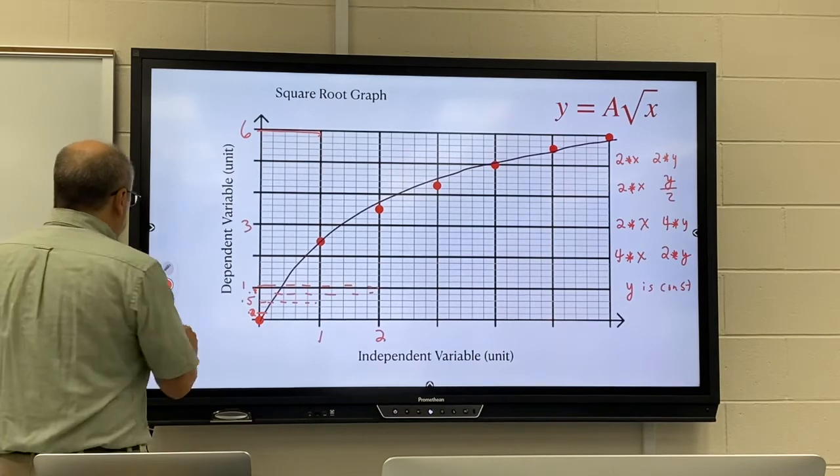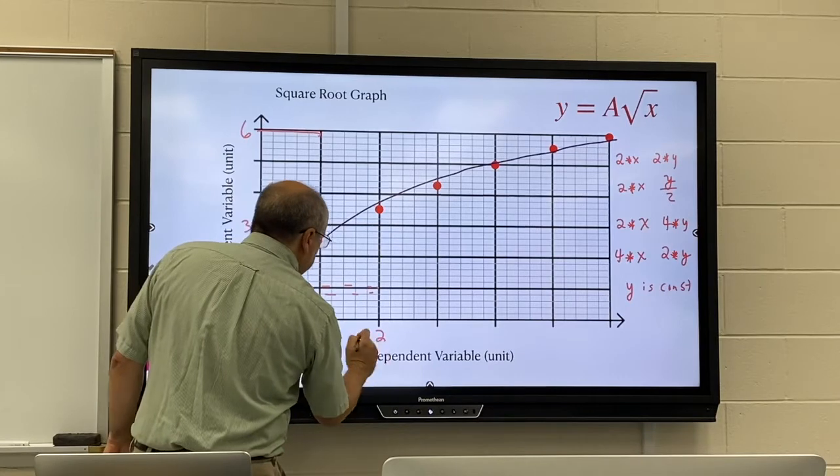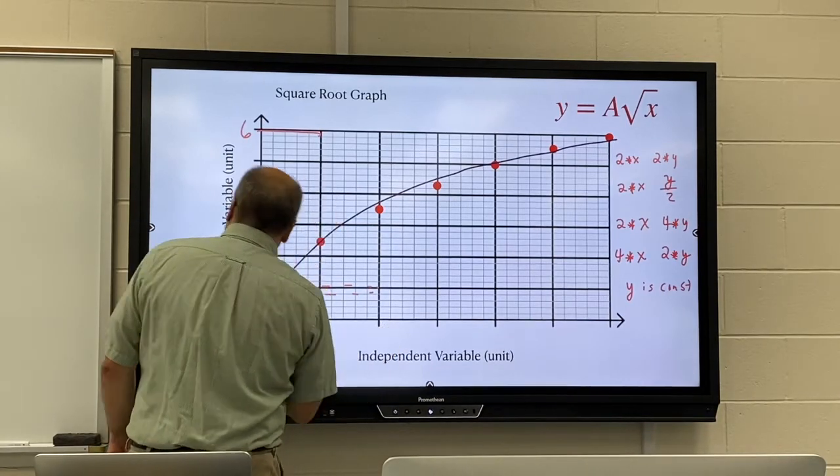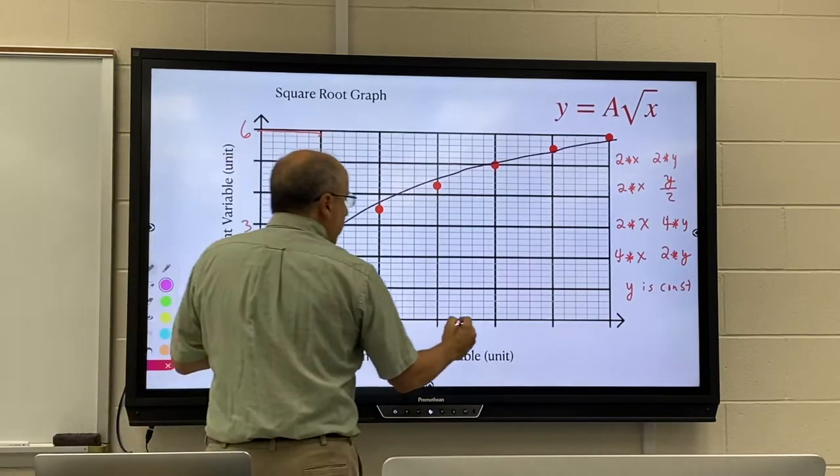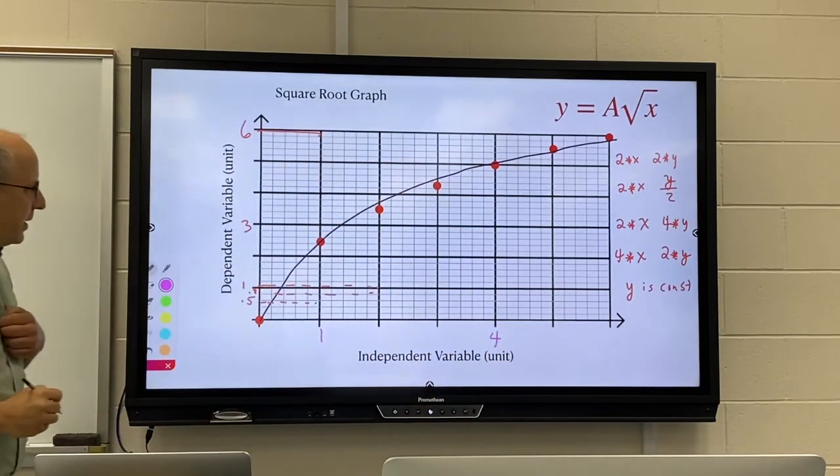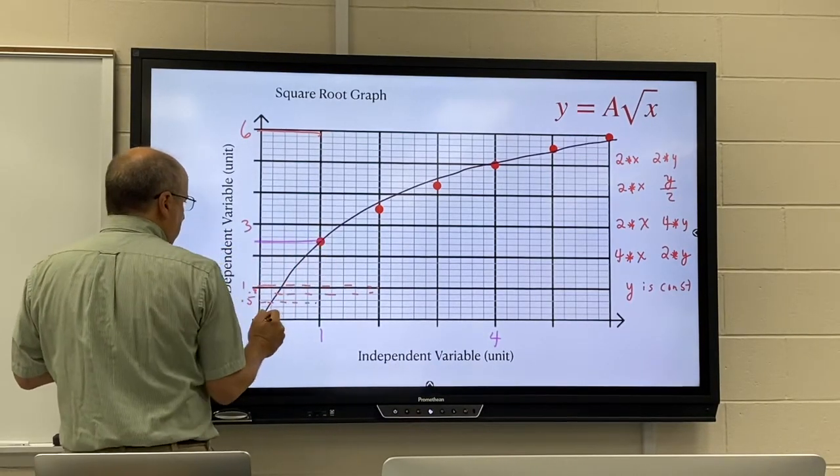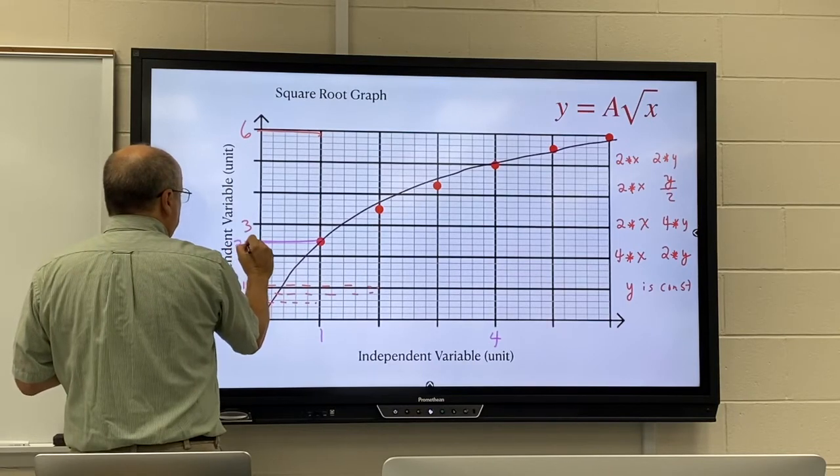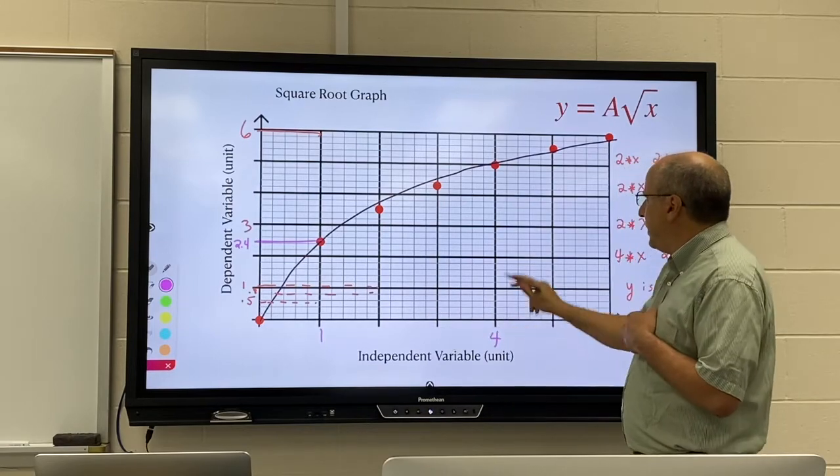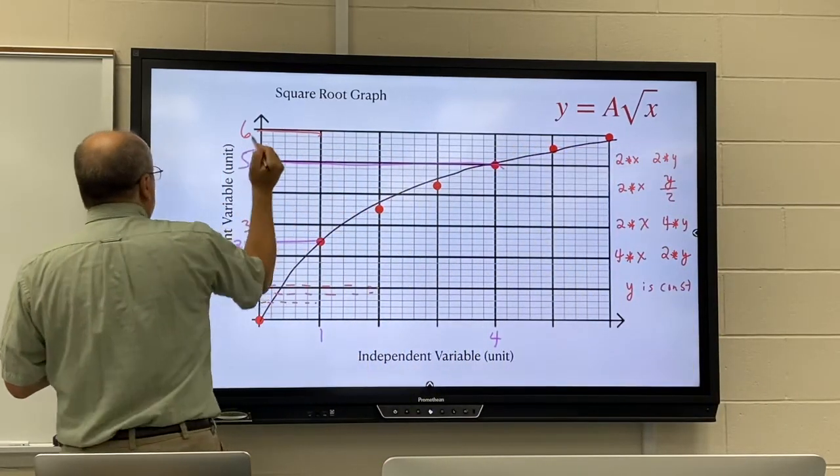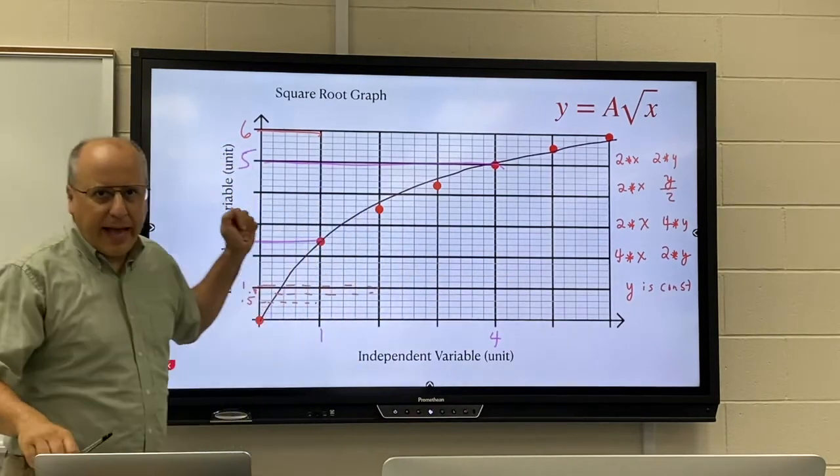For square root graph it's a little trickier. Here if we want to double my Y, I have to go four times bigger with X. So here I am a little more than two, I'm about 2.4 to 2.5, and then when I go four times bigger I get to about five. Doubled my Y, I had to go four times my X.